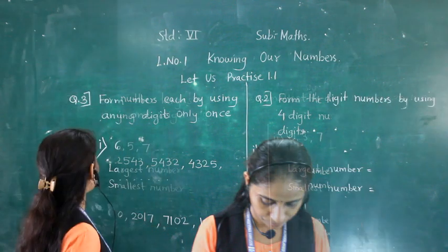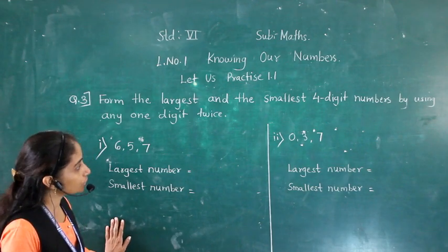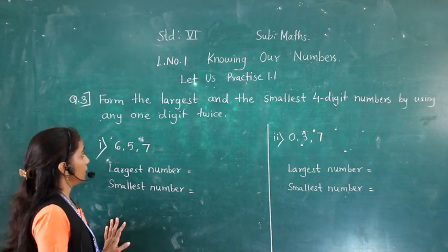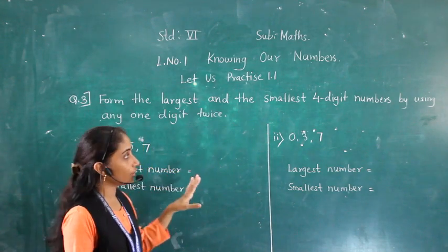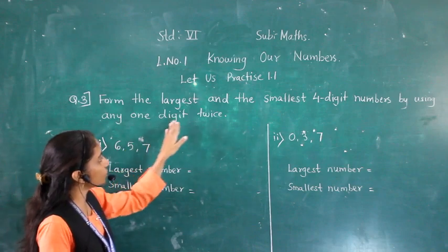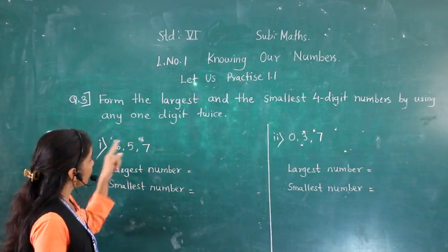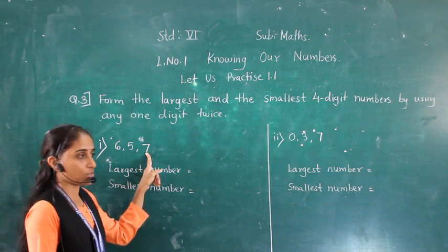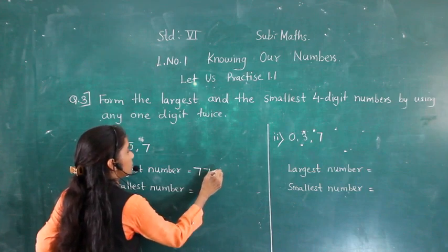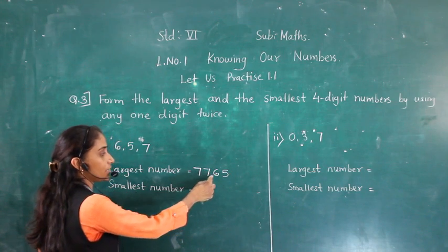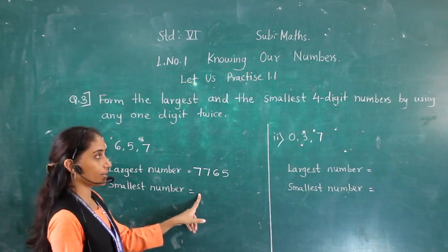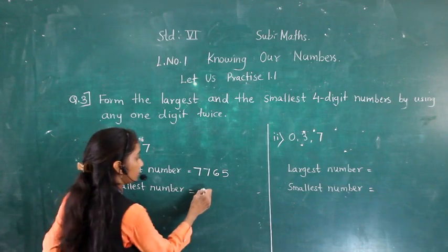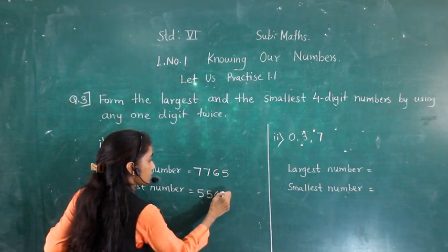Question 3: Form the largest and smallest 4-digit numbers using the digits 6, 5, and 7, with one digit used twice. For the largest number, we take the greatest digit 7 twice: 7765. For the smallest number, we take the smallest digit 5 twice: 5567.